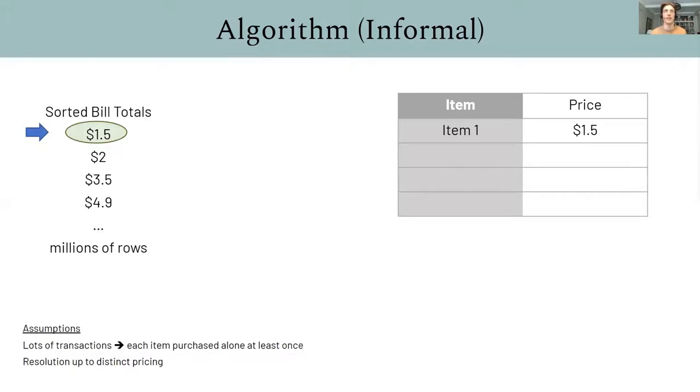So, stepping through the algorithm, first, we sort distinct bill totals from smallest to largest. And we assert that the smallest bill total is a unique single product purchase. That's item one. And this follows from the assumptions. Next, we look at the $2 bill total. And we ask, first, is this $2 total close to the item one price? It's not.